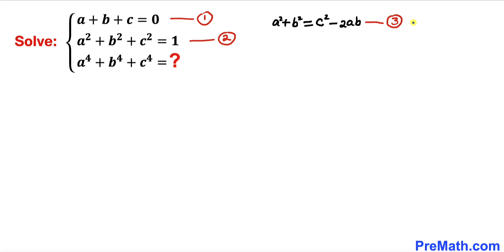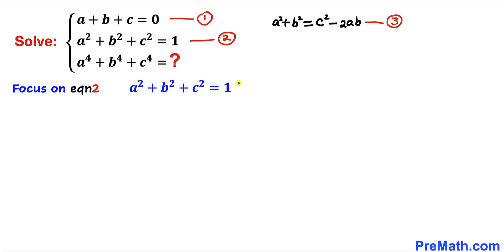Let me call this equation number three. Now let's focus on equation two. I have copied down equation two and I'm going to move c squared to the right hand side, giving us a squared plus b squared equals 1 minus c squared. Let me call this equation number four.